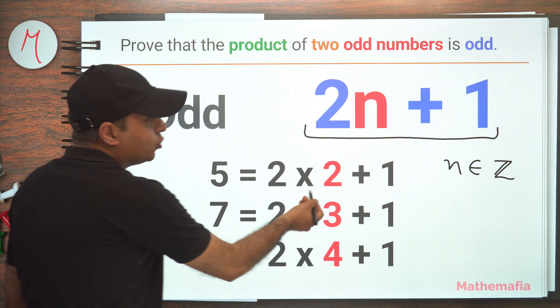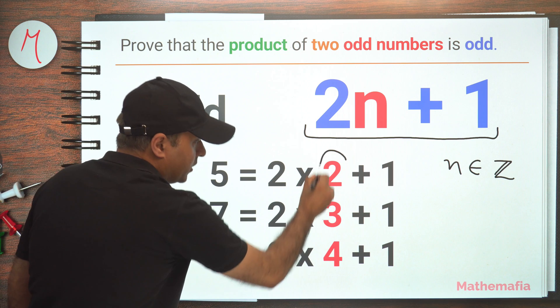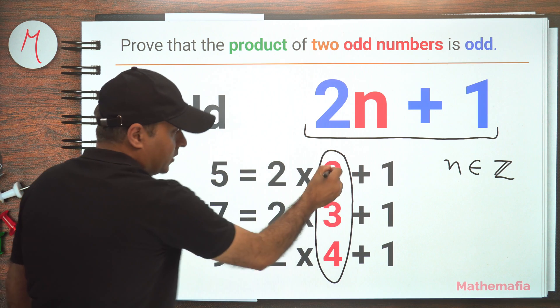For example, 5 can be written as 2 times 2 plus 1, 7 can be written as 2 times 3 plus 1. So this is my n, right? So this is n.